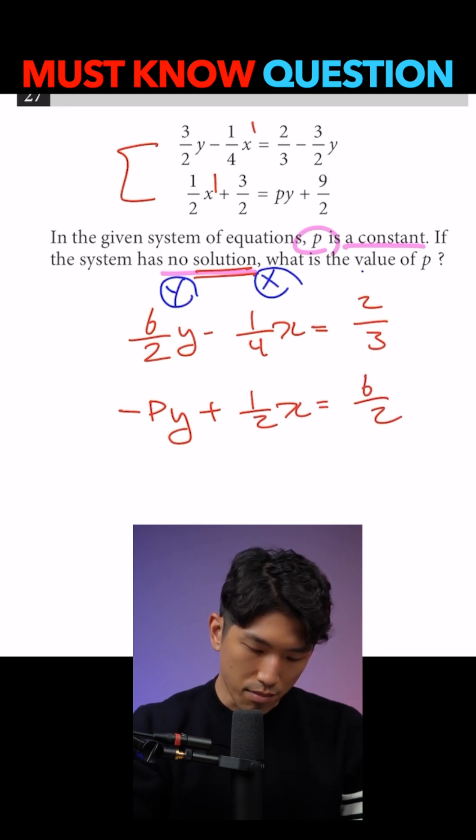And now that our Ys, X, and the numbers are all lined up, I'm going to compare the ratio of the coefficients or the numbers attached to these variables. And according to the matching rule, the ratio of the Ys and X must be the same.